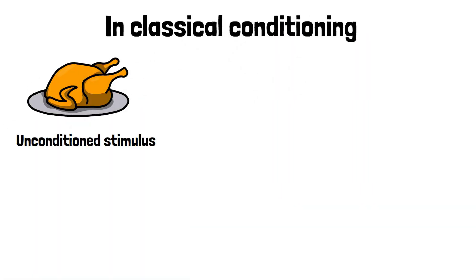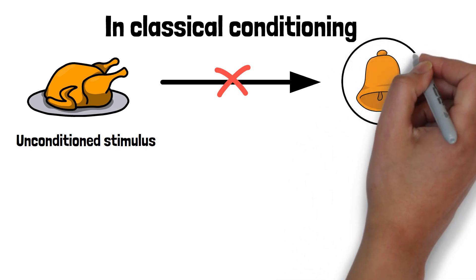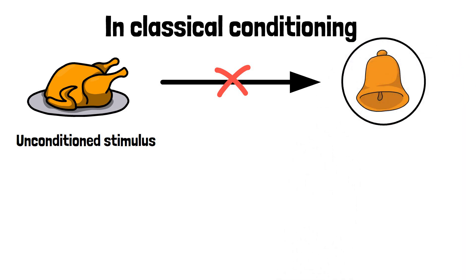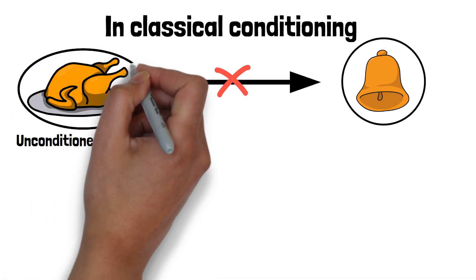In classical conditioning, an unconditioned stimulus is paired with something that doesn't normally cause a reaction, like a sound or a light. Over time, this thing that didn't cause a reaction before starts to cause the same response as the unconditioned stimulus.